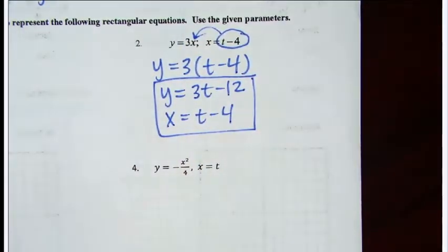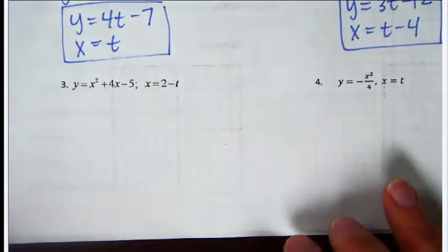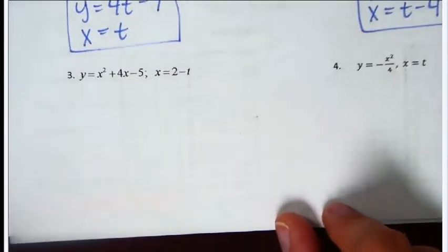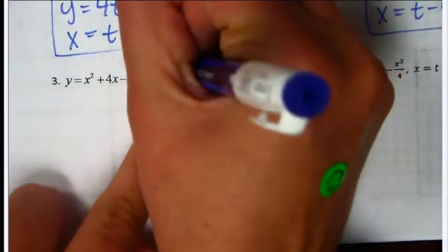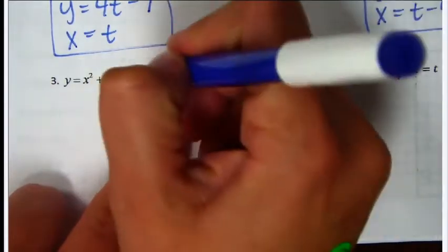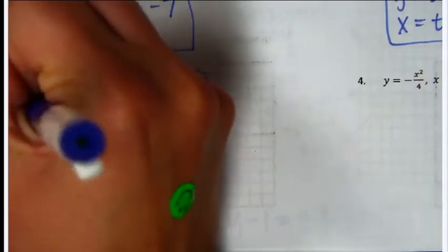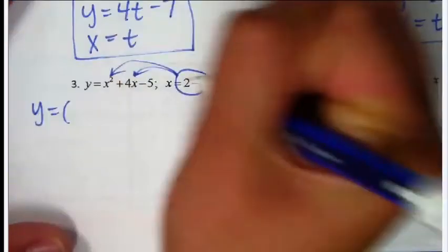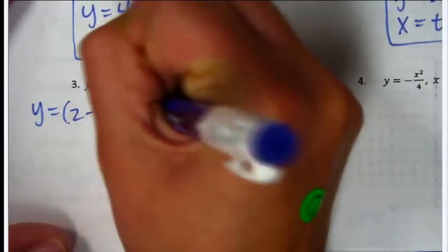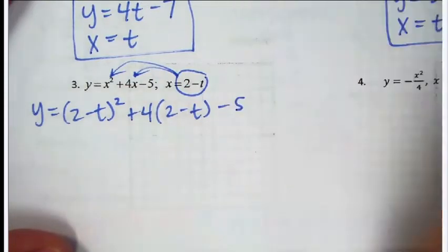That's the gist of how you do it. The next one is the same thing — it's not any more difficult, it's just a little more algebra. When I take the piece for x to plug in, I'm plugging it into two places because there are two x's. So: y equals (2 minus t) squared plus 4 times (2 minus t) minus 5.